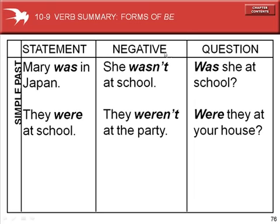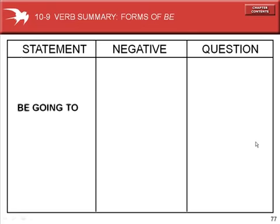To form the negative: she wasn't at school. They weren't at the party. And to form questions: Was she at school? Were they at your house? Simple past tense.